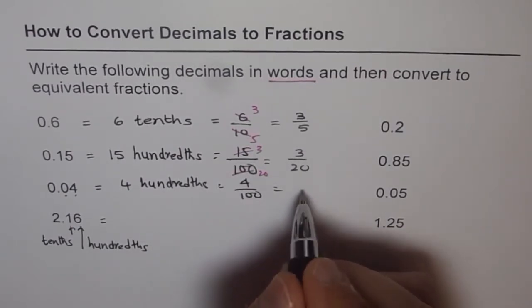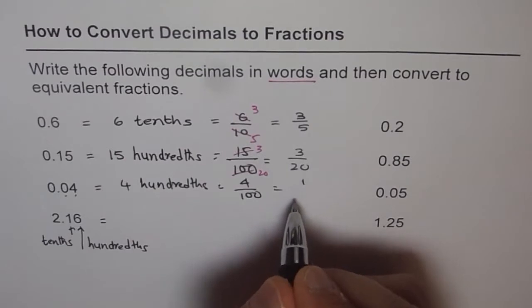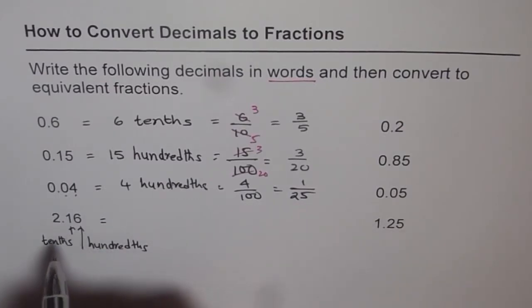Which you could write as 4 out of 100. And simplifying, you know how many quarters are there? In a dollar there are 4 quarters, so you get 1 out of 25. So that's what it is.